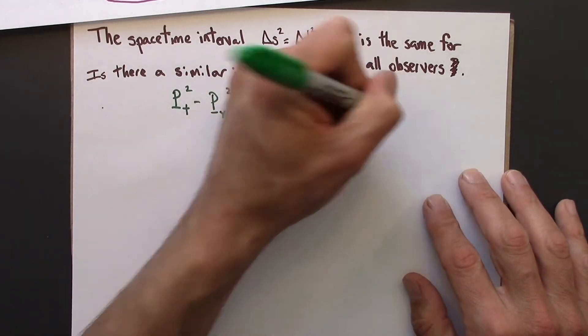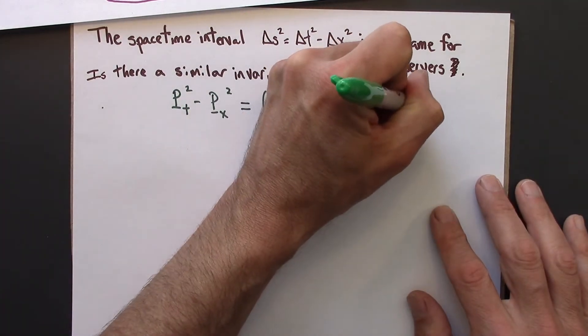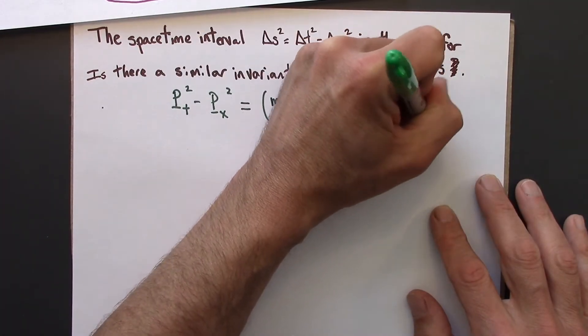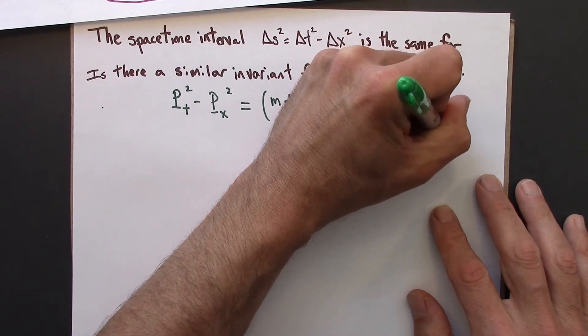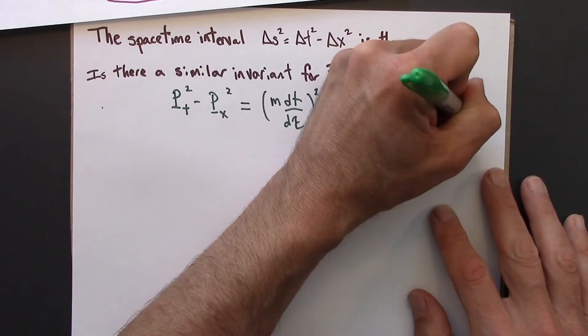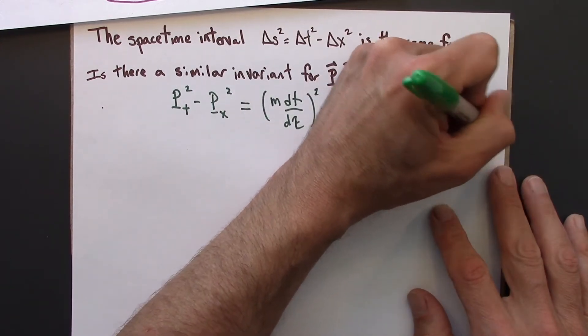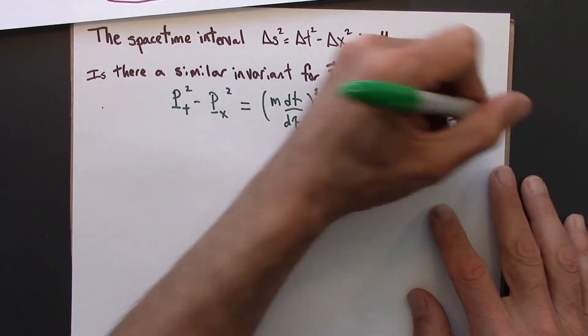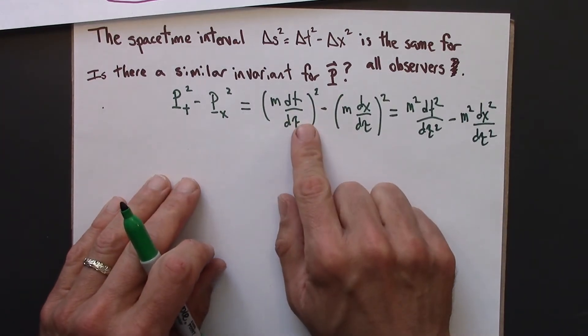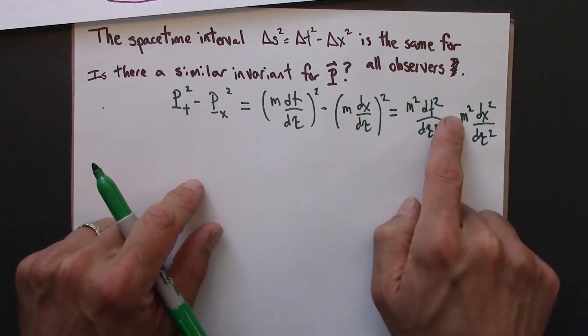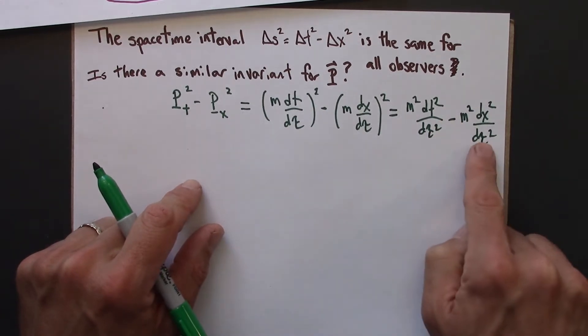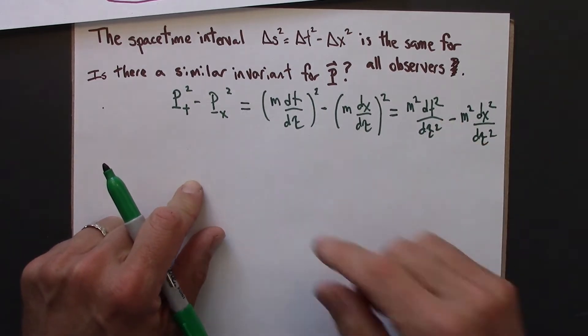Rather than just say all that, I'm just going to write this. I thought saying it would save time, but I don't think it does. Okay, so I'm just squaring everything in the parentheses. And then I say, hey, there's an m squared in both terms, and there's a dtau squared in both terms. So let's factor that out.